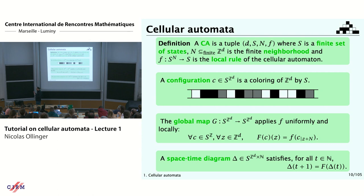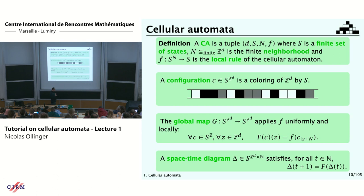Then what we play on are configurations. A configuration is just a painting of the grid with the state — a coloring of Z^d by your state set S. Then your dynamics is given by the global map. The global map is the application of the local rule at every point of the configuration in a uniform way. If you call it G, then for every configuration, if you look at point z, you should see the image by F of the local part of the configuration around z.